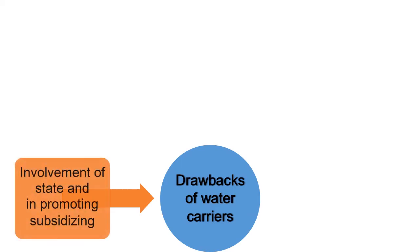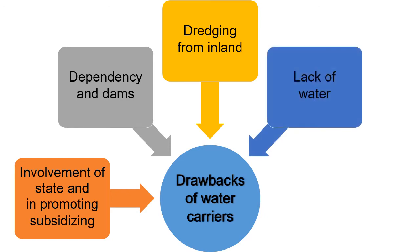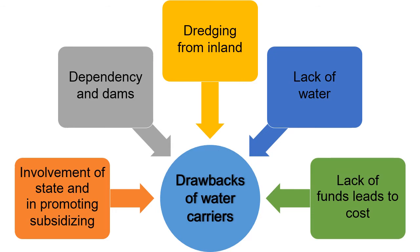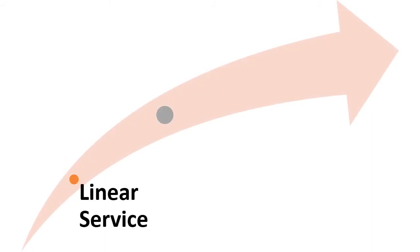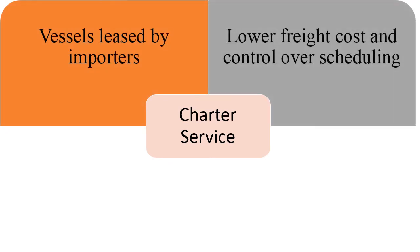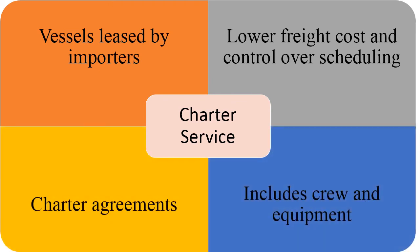Drawbacks of Water Carriers include: involvement of Federal, State, and Government in promoting and subsidizing; dependency on locks and dams; dredging materials from inland waterways; lack of investment in water infrastructure; and lack of government funds leading to high costs. Types of Services are Linear Service and Charter Service. Linear Services are regular services between major ports that unload imports. Charter Services are vessels leased by importers offering lower freight costs and control over scheduling; charter agreements include crew and equipment.